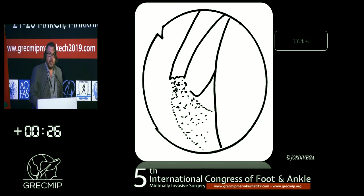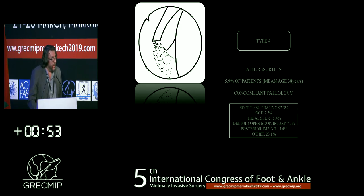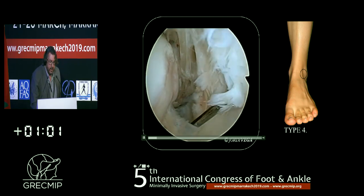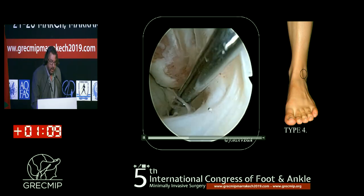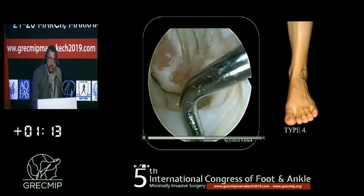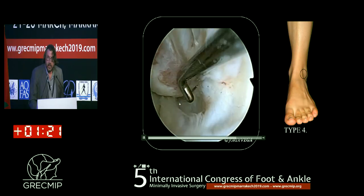Finally, Type 4 means the ligament has disappeared — completely or partially. It is seen in only 5 to 6% of patients. The most important characteristic is that these patients have a high percentage of soft tissue impingement and pathological tissue, which has probably caused the ligament to disappear. In this patient you can see the footprint area, and there is no ligament. We only observe what is probably the connecting fiber, and we don't know why this fiber is still present, but it is.